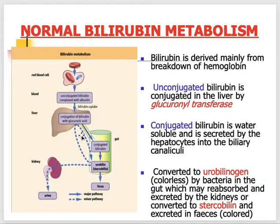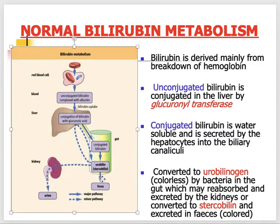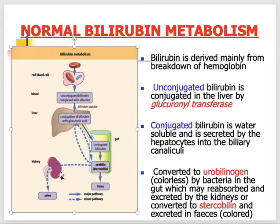Bilirubin also gives color to stools and is deposited into the skin. Whenever we take a history of jaundice, we always look for yellowish discoloration, ask about the color of the urine, and ask about the color of the stool — to differentiate and identify the different causes of jaundice.